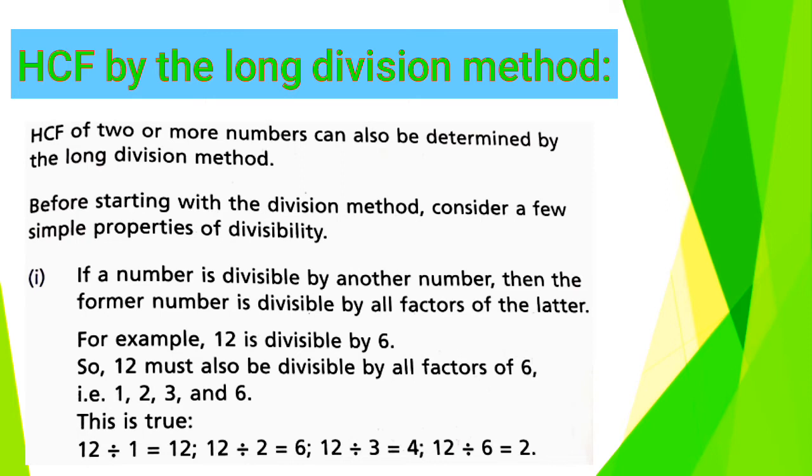Property number 1: If a number is divisible by another number, then the former number is divisible by all factors of the latter. Don't worry, you will understand with the help of an example.